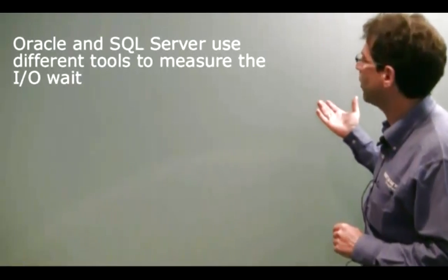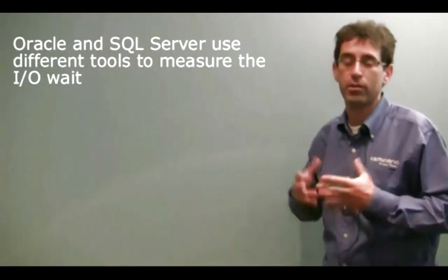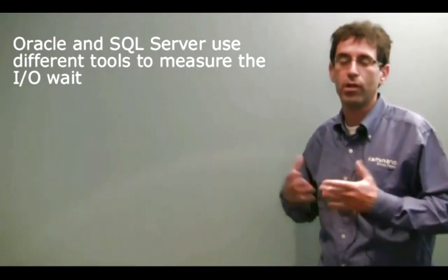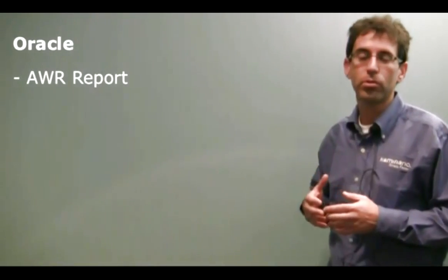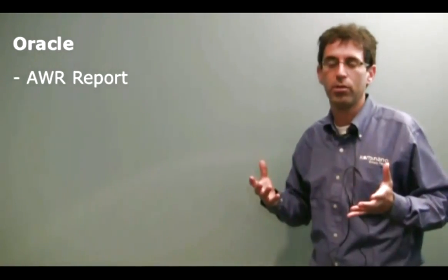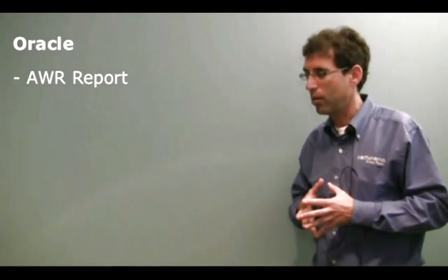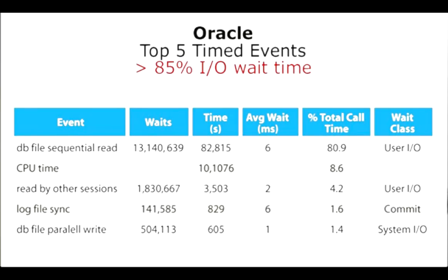With Oracle, I use different tools to calculate the IO wait. With Oracle, I use the AWR report, which gives me fairly easy access to all the information I need to calculate the IO wait. In this case, you can see it's a situation where more than 85% of the time Oracle was waiting for storage — so it's a storage bottleneck.